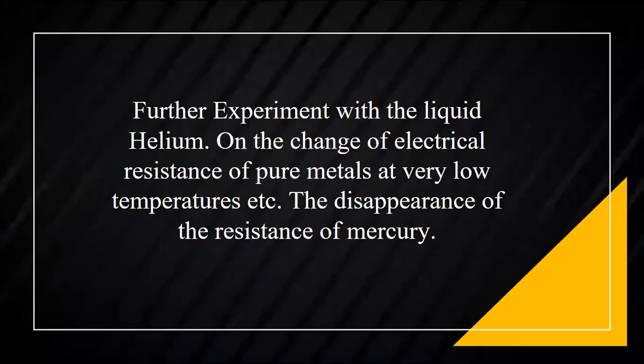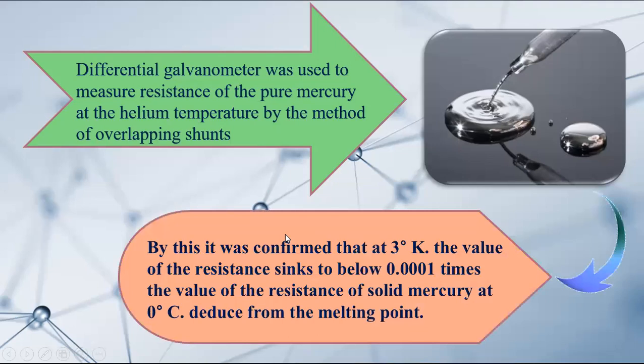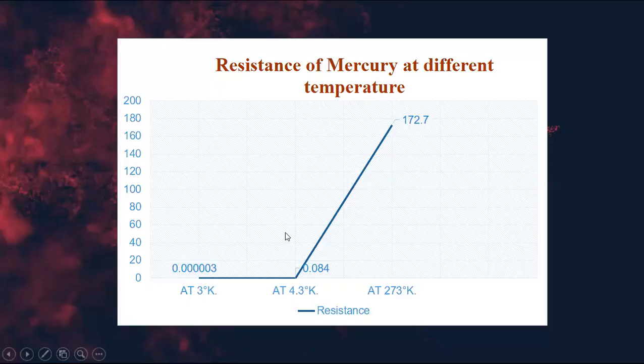Moving on to the second part of the paper, the second part closely studied the disappearance of the resistance of mercury with the help of a differential galvanometer used to measure the resistance of pure mercury at helium temperature by the method of Overland tension. It was confirmed that at 3 Kelvin the value of resistance sinks to below 0.001 times the value of resistance of solid mercury.